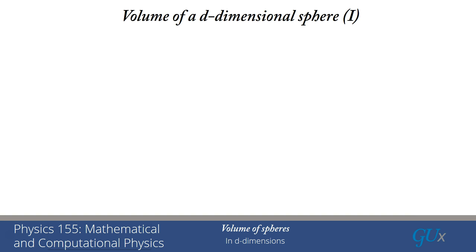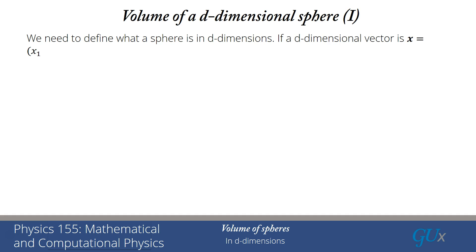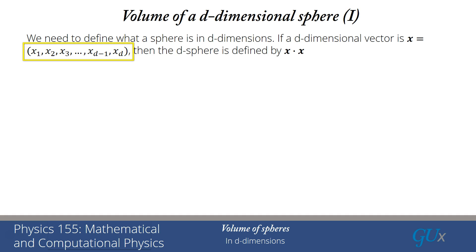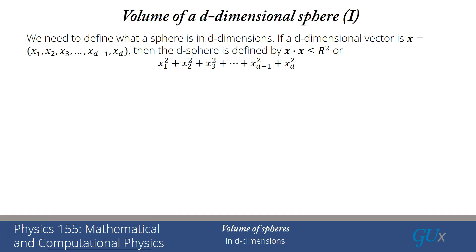The first thing we want to do is determine our coordinates for the d-dimensional space, and from that determine the equation of a sphere. We start with our d-dimensional vector x, which is the tuple (x1, x2, x3, ..., xd). The sphere is defined by x dot x ≤ r², with r being the radius. Written explicitly: x1² + x2² + ... + xd² ≤ r². That's clearly the definition of a sphere in d dimensions.